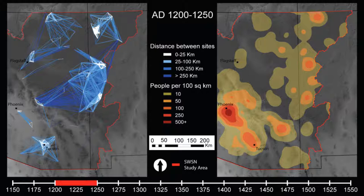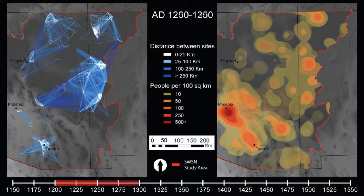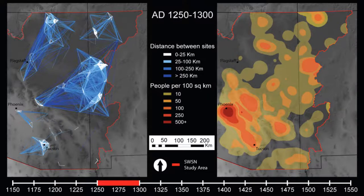For both the AD 1200-1250 and 1250-1300 intervals, the northern half of the Southwest was characterized by moderate population density but a large number of network connections, many of which connect sites separated by several days of travel. Population density is somewhat greater in the south, but network connections appear to largely remain within major river valleys.